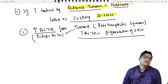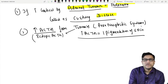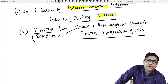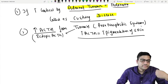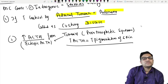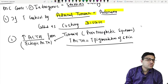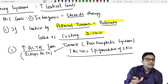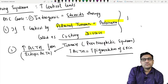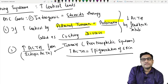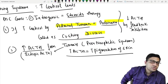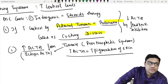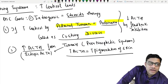Increased ACTH causes skin pigmentation because it mimics MSH — melanocyte-stimulating hormone — increasing melanin production. Conversely, in Cushing's syndrome caused by high cortisol from steroids or adrenal tumors, the ACTH level will be decreased due to negative feedback. This helps differentiate the cause of Cushing's syndrome.